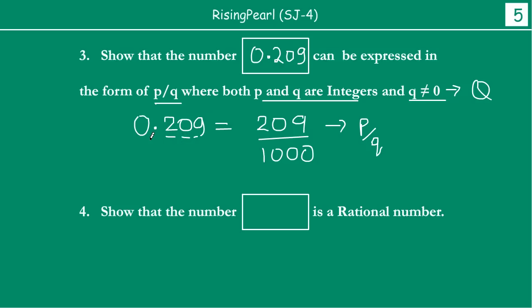you took the decimal number and you wrote it in the form p by q, where both p and q are integers, because p is 209 and q is 1000, both are integers, and q is not equal to 0. So this is how we can say this is a rational number.